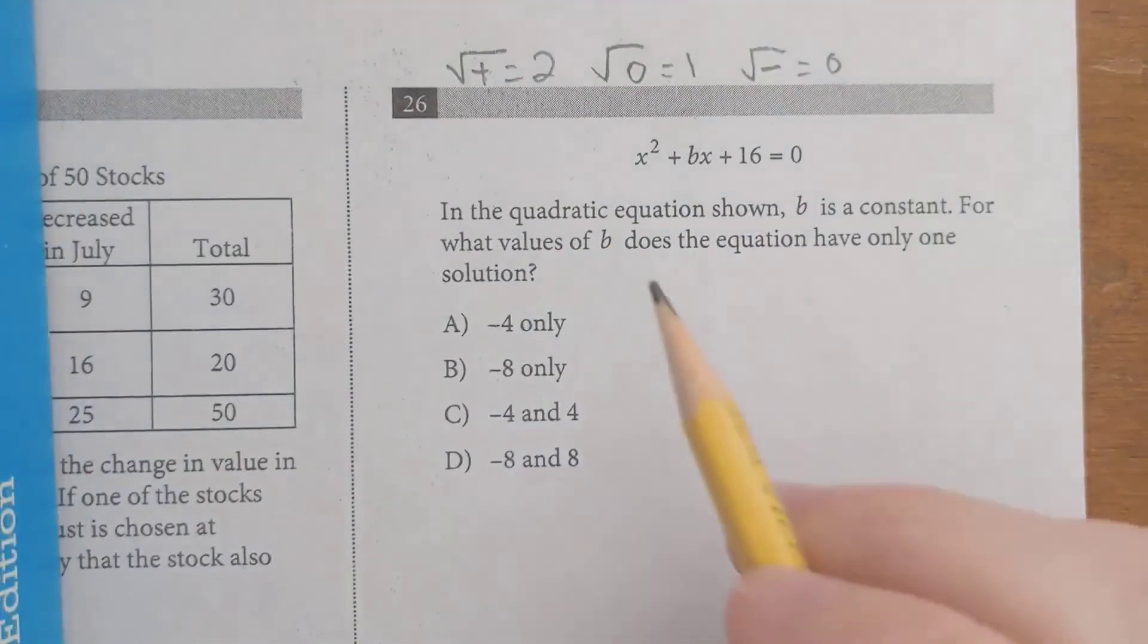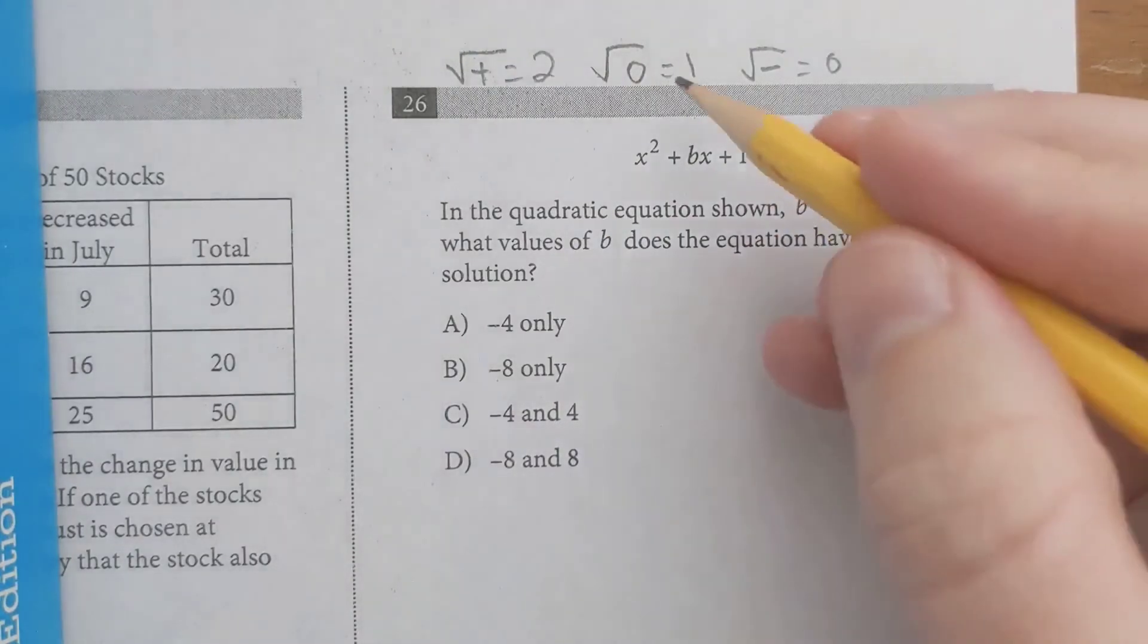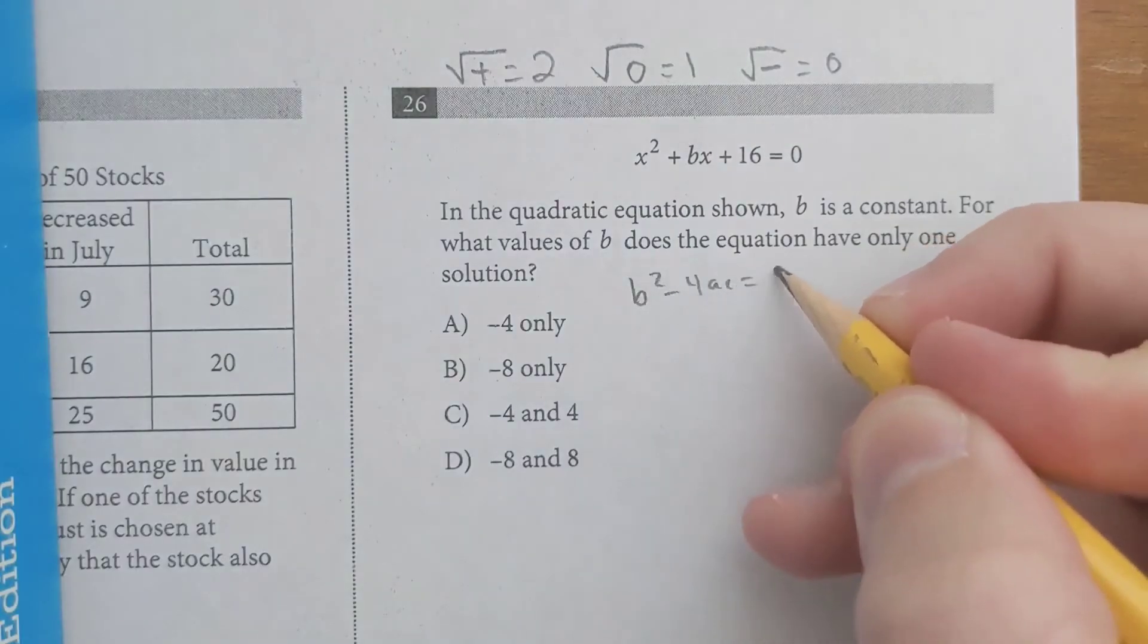Let's do one more example. It's a quadratic. They're asking about one solution. So we want our discriminant to equal zero. So b squared minus 4ac equals zero.